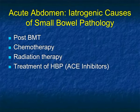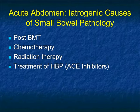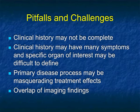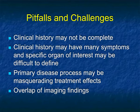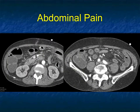Another topic I want to address is iatrogenic causes of small bowel pathology. I think about oncology patients post-BMT, chemotherapy and radiation therapy, and patients on ACE inhibitors for hypertension. The clinical history may not be complete — if you have a history of bone marrow transplant or recently started hypertensive drugs you'll be prepared, but particularly with the latter, you typically won't have that history. The primary disease process may be masquerading treatment effects, with an overlap of findings.